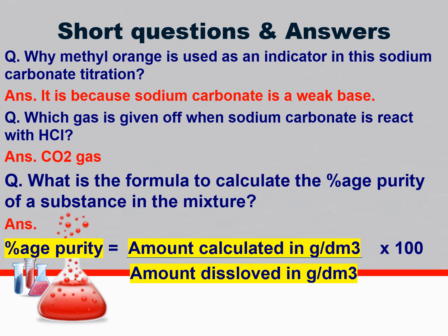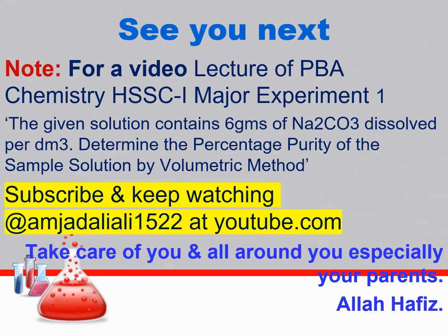What is the formula to calculate the percentage purity of a substance in the mixture? In this titration practical you are supposed to calculate the percentage purity. The formula is: (amount calculated in g/dm³ ÷ amount dissolved in g/dm³) × 100. In this way you can get the percentage purity. See you next for a video lecture of PBA chemistry at HSSC-1 major experiment number 1. Please subscribe and keep watching my channel Amjad Ali 1522 at YouTube.